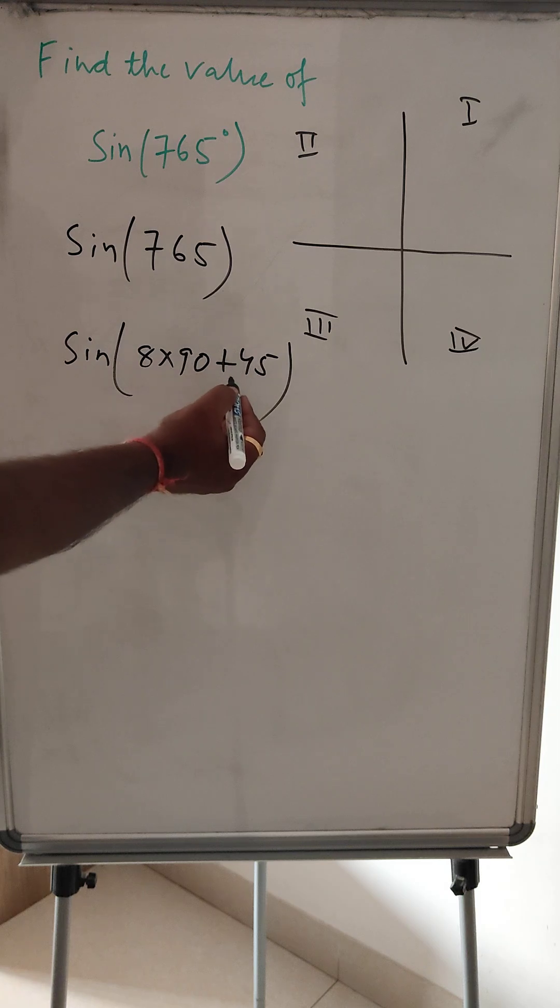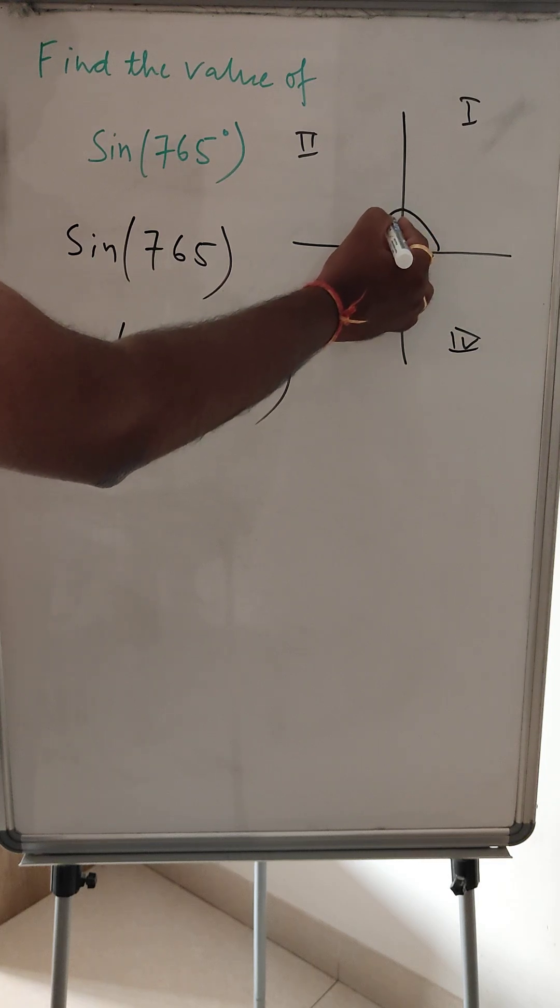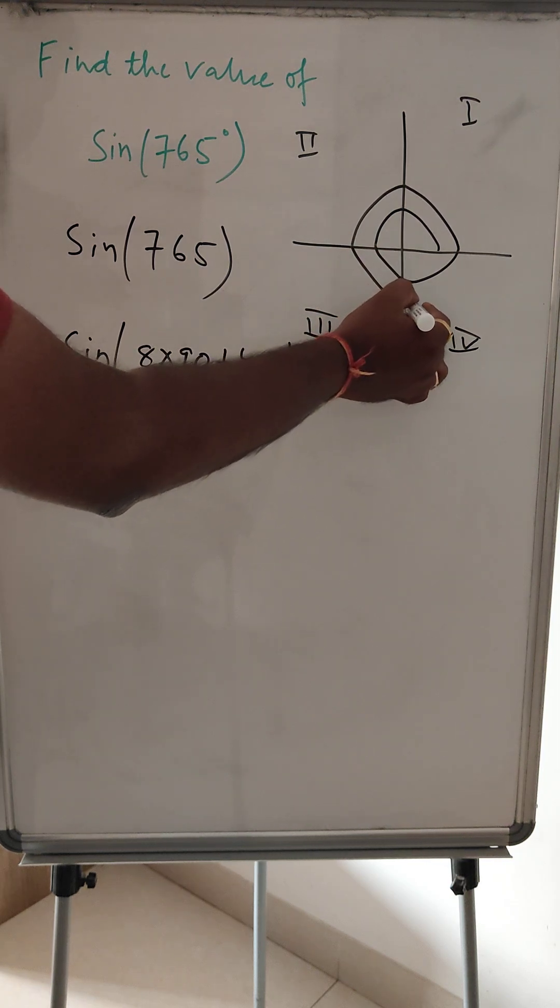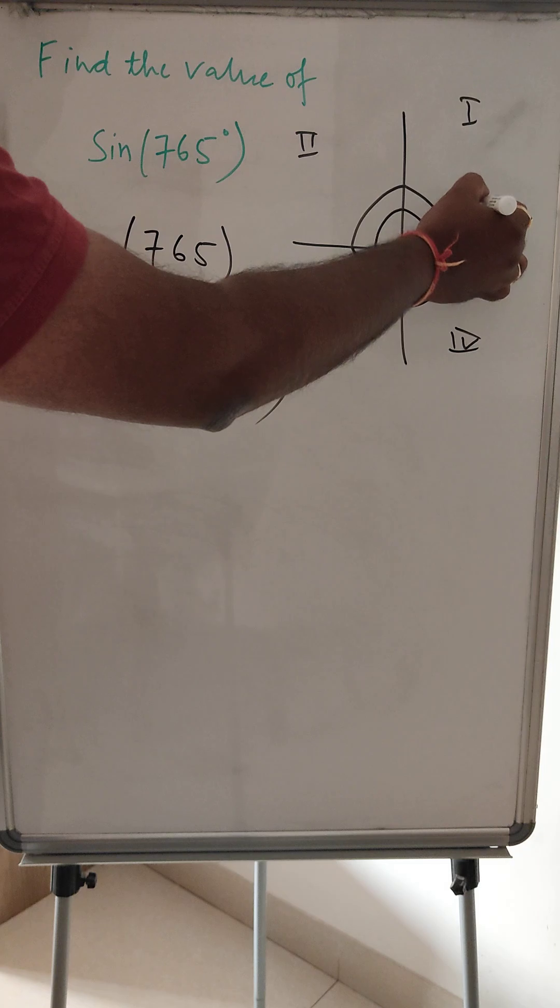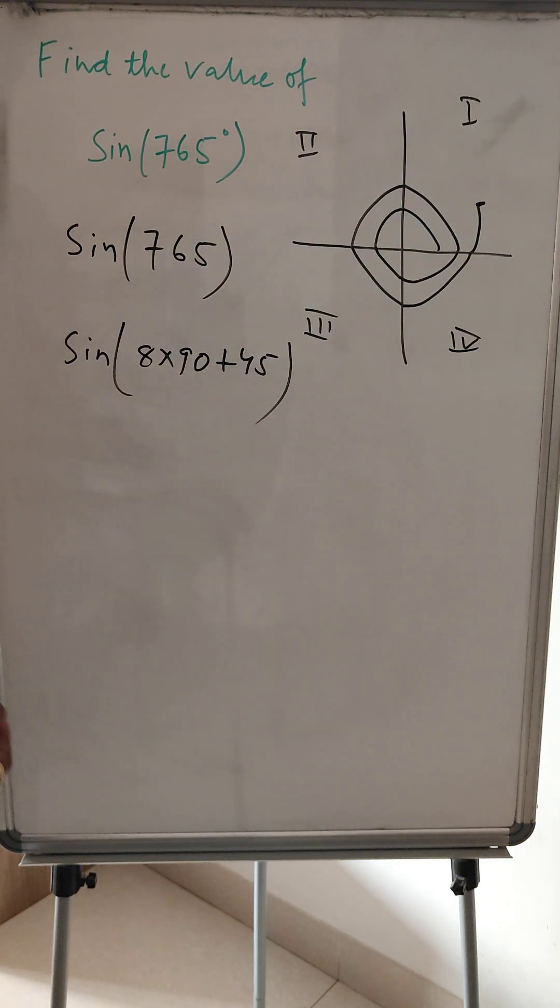So this is 8, 8 into 90 plus 45, right. So this is 90, first 1, 2, 3, 4, 5, 6, 7, 8 and this is 45. So this will come into this quadrant, this first quadrant.